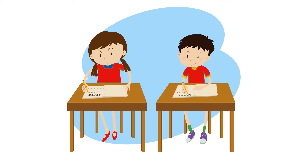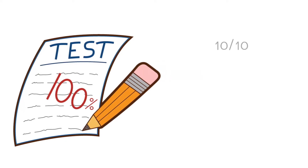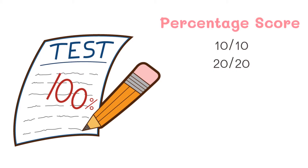Imagine yourself taking a test and getting a hundred percent on your test result. What does the hundred percent mean? It means that you got all items correct and have a perfect score. You may have gotten 10 over 10 or 20 over 20 — that is called the percentage score. If you want to get your percentage score in a test, you simply divide your score over the total test items and multiply it by 100. For example, 20 over 20 times 100 equals 100 percent.